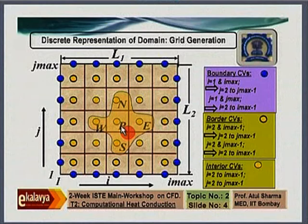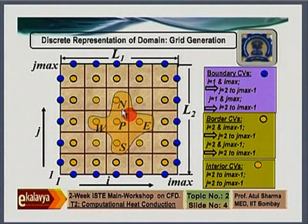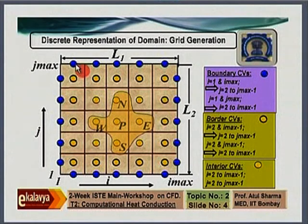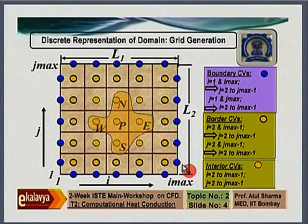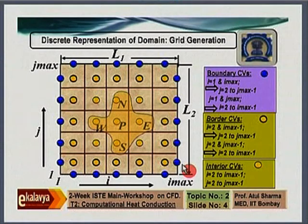Those interior control volumes whose one of the neighbors is a blue circle — a boundary point — are called border control volumes. So all yellow circles are interior control volumes, but border control volumes are those interior control volumes whose one neighbor is a boundary control volume.